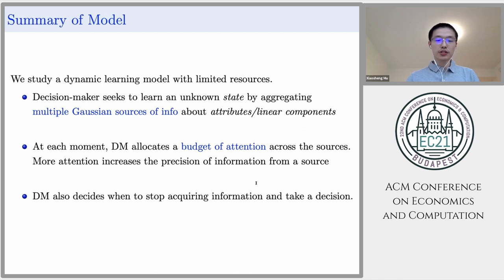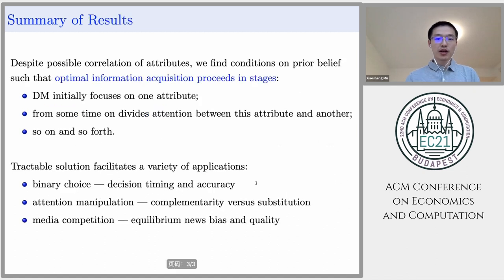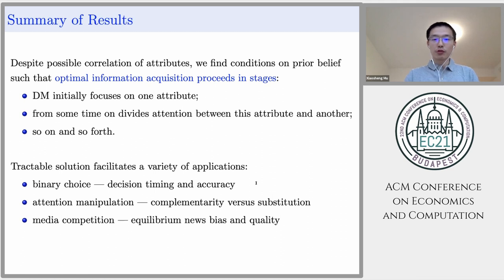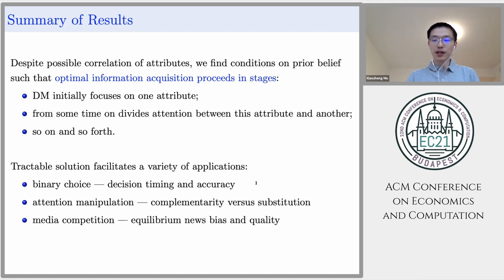The decision maker also decides when to stop acquiring information and take a final decision. What we show is that despite the possibility of the attributes being correlated, we can characterize conditions on the prior beliefs such that the optimal strategy can be characterized in a multi-stage structure.